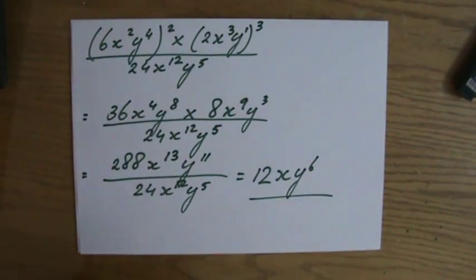A combination of the third law of the indices, the first law of the indices, the second law of the indices. The answer is 12xy to the power of 6. Nothing to be scared of. Hopefully you agree with that.